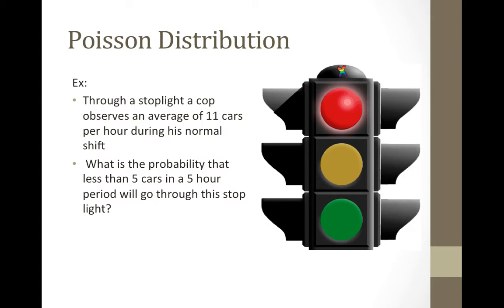Here's an example of a typical Poisson problem: Through a stoplight, a cop observes an average of 11 cars per hour during his normal shift. What is the probability that less than five cars in a five-hour period will go through this stoplight? We see right away that an average is being mentioned in this problem. When number of occurrences per unit time, space, etc. are given, Poisson is generally the method used. There are also no number of trials mentioned, which classifies this example as a Poisson distribution problem.